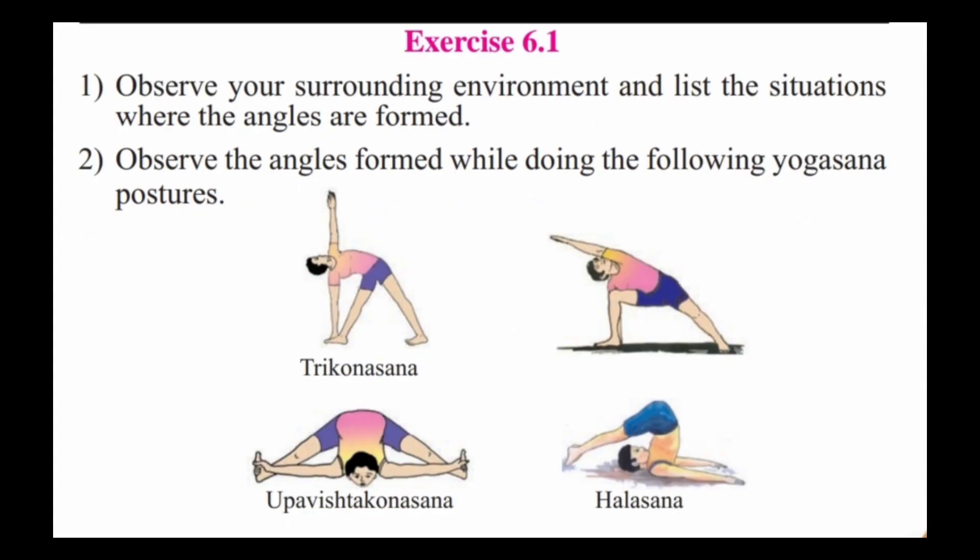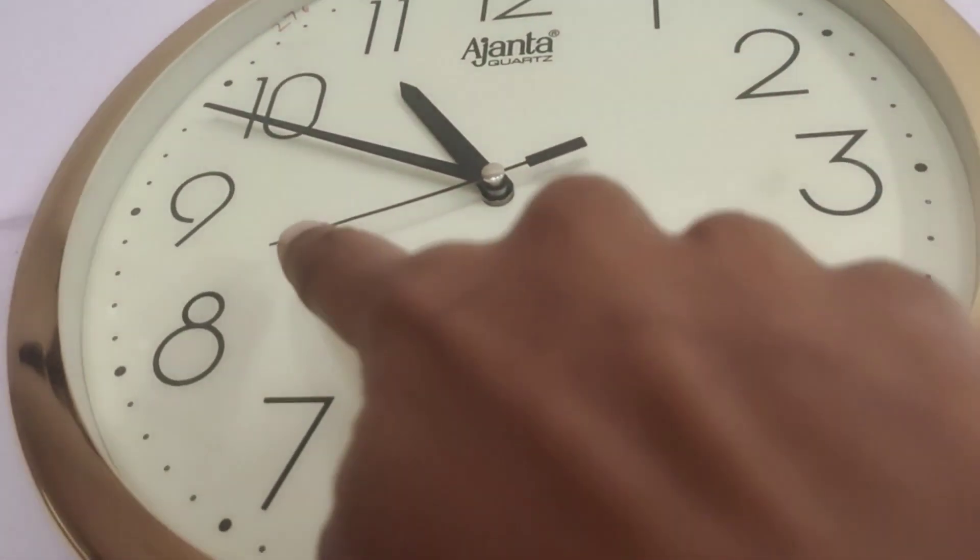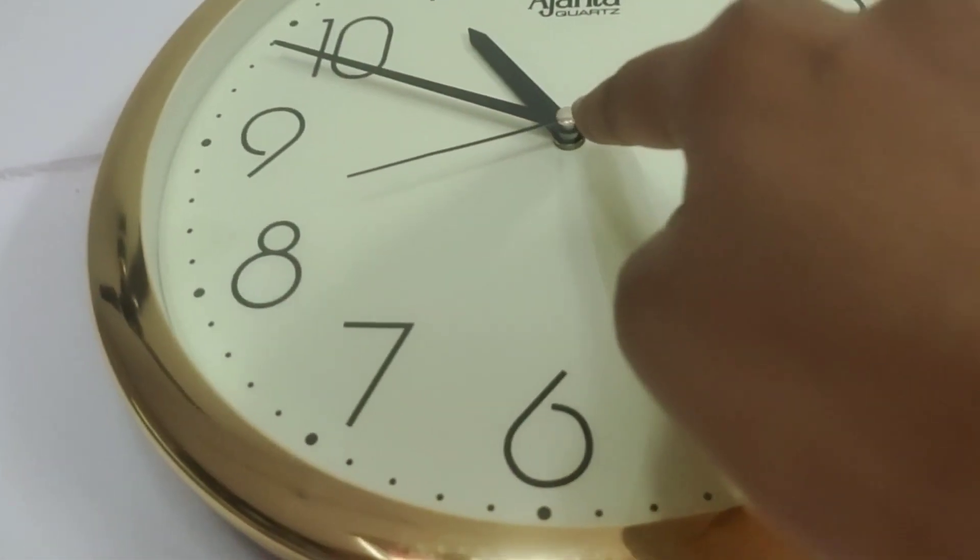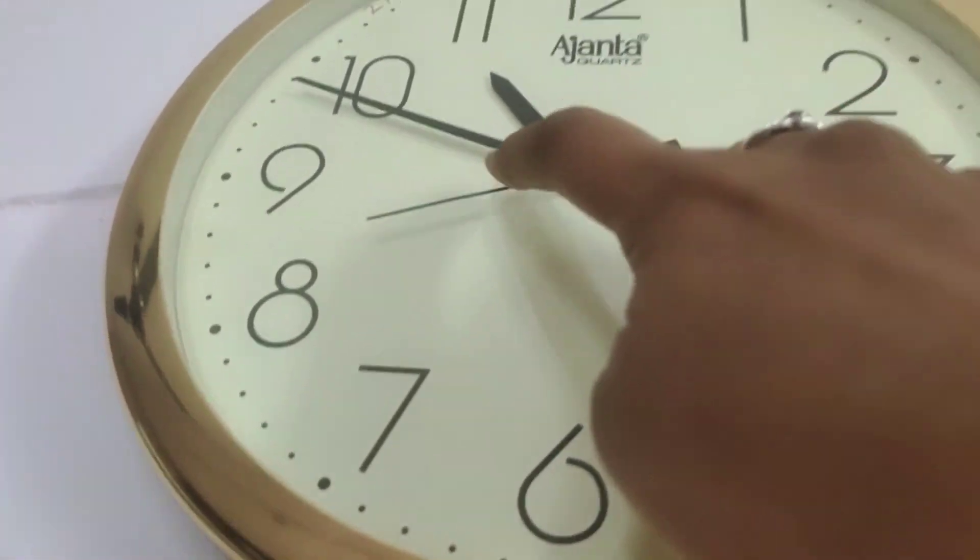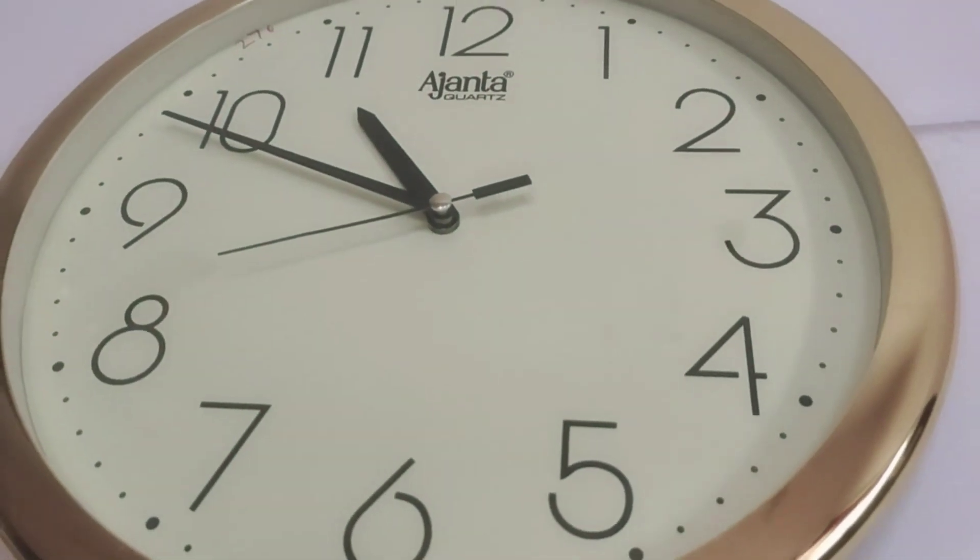Next, we will see exercise 6.1. First question: Observe your surrounding environment and list the situations where the angles are formed. See, this is the needles of the clock. See, this is one needle and this is another needle. In the center, there is an angle formed. This is also an angle formed in the clock. Next, in the edge of the TV or a blackboard, these two edges form an angle.